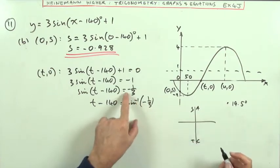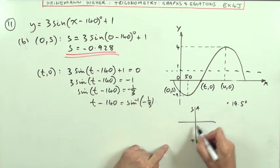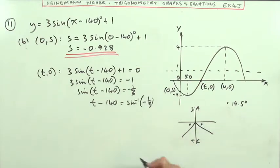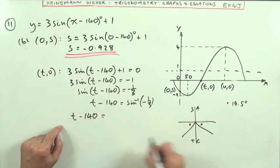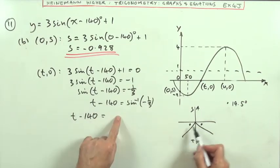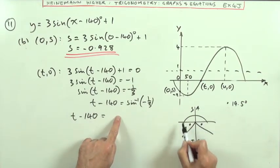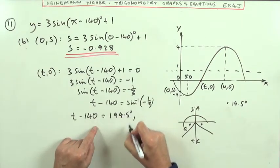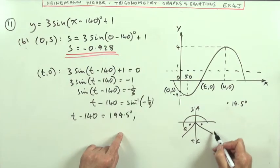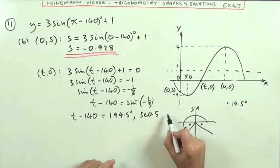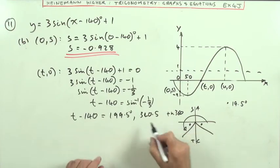The sine says it's negative. So it's going to be either 19.5 here or 19.5 there. So I've got T minus 140 equals these two angles. So I've got that equal to 19.5 away beyond 180. So that'll be 199.5 or 19.5 short of 360. So it's 340.5. I could say plus N360 if things start to go out of range.